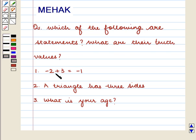The three given sentences are: minus 2 plus 3 is equal to minus 1; a triangle has three sides; and what is your age?